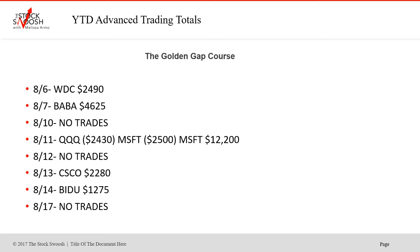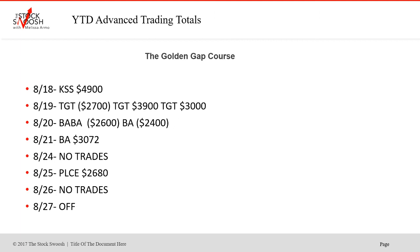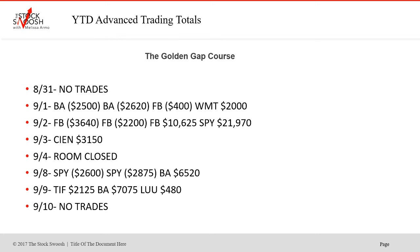August 12th, no trades. August 13th, Cisco. August 14th, Baidu. August 17th, no trades. August 18th, KSS was a winner. August 19th, Target was a loser then a winner, another winner in Target. August 20th, Babel lost, and then BA lost twice. BA won on the 21st. No trades on the 24th, PLCE won on the 25th, no trades on the 26th, off on the 27th, and then no trades on the 31st.